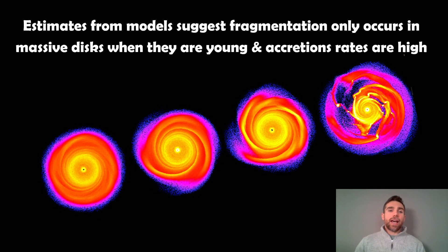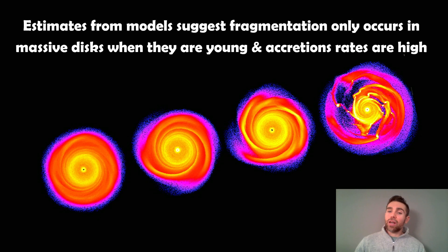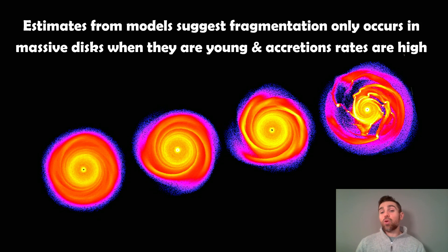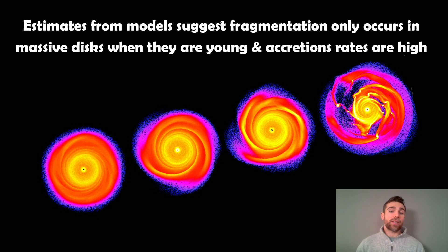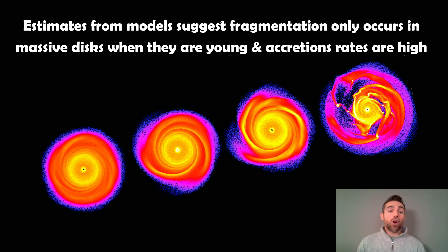Estimates from models suggest that fragmentation only occurs in massive disks and also when they're young. The reason they need to be young is that material in the disk is continuously falling onto the star and slowly growing into other planets and clumps, which depletes the disk. So it has to happen when the disk still has a lot of material, which occurs early on. Disk fragmentation is therefore expected to occur early on after the initial disk has formed.